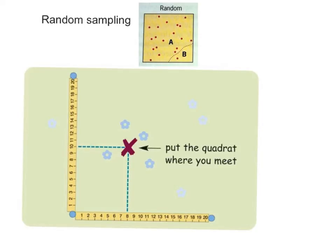And if I were to select two random numbers, 10 and 8, where 10 and 8 meet, I would put my quadrat down if I was in a wooded area or a meadow or a sand dune ecosystem, something like that. I would then choose another set of random numbers and continue my survey there.